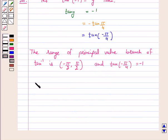the principal value of tan inverse minus 1 is minus pi by 4.